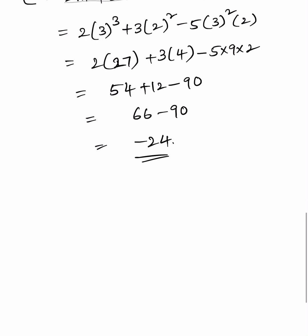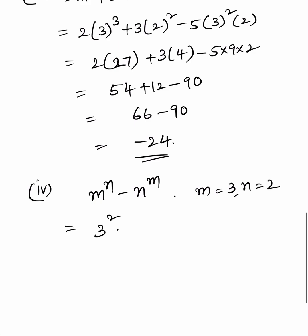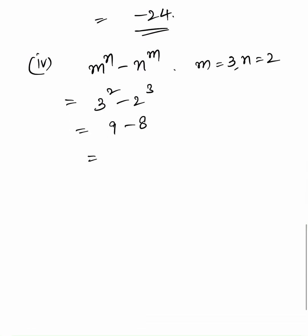Fourth bit: m power n minus n power m, where m is 3 and n is 2. That equals 3 square minus 2 cube, equals 9 minus 8, equals 1.